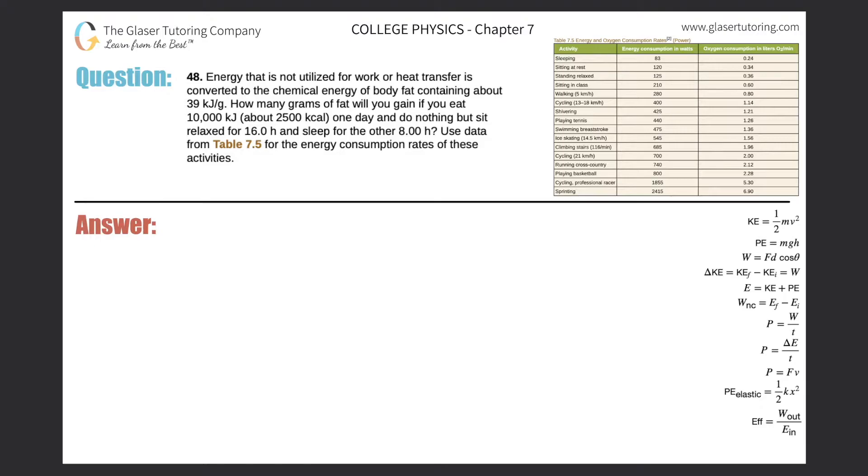Number 48. Energy that is not utilized for work or heat transfer is converted to the chemical energy of body fat containing about 39 kilojoules per gram. How many grams of fat will you gain if you eat 10,000 kilojoules or about 2,500 kilocalories one day and do nothing but sit relaxed for 16 hours and sleep for another eight hours?